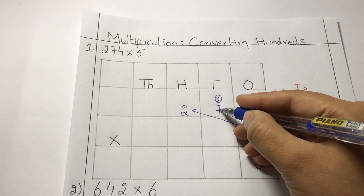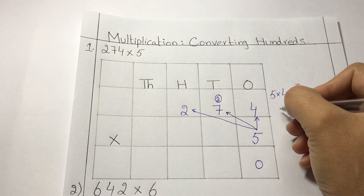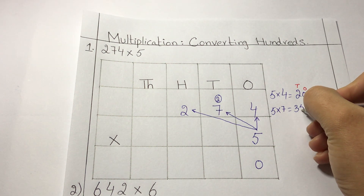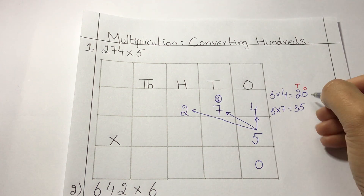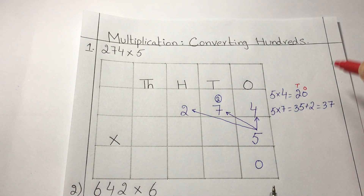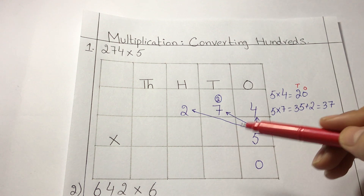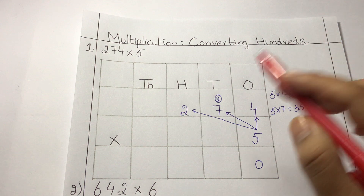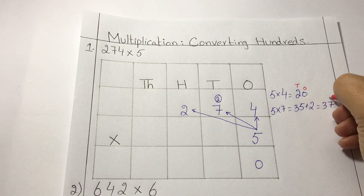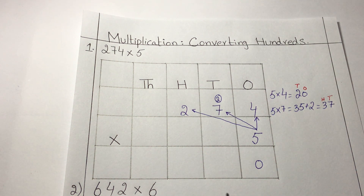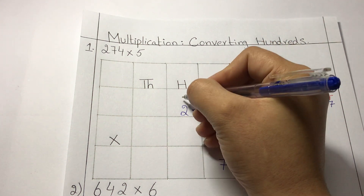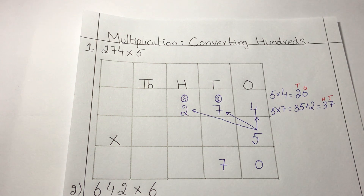Now multiply five with seven, the digit in the tens column. Five sevens are thirty five, and don't forget to add your carry: thirty five plus two is thirty seven. Again, thirty seven is a two digit number so we will convert it and give a carry to the next hundreds place. In thirty seven, we have seven tens and three hundreds.